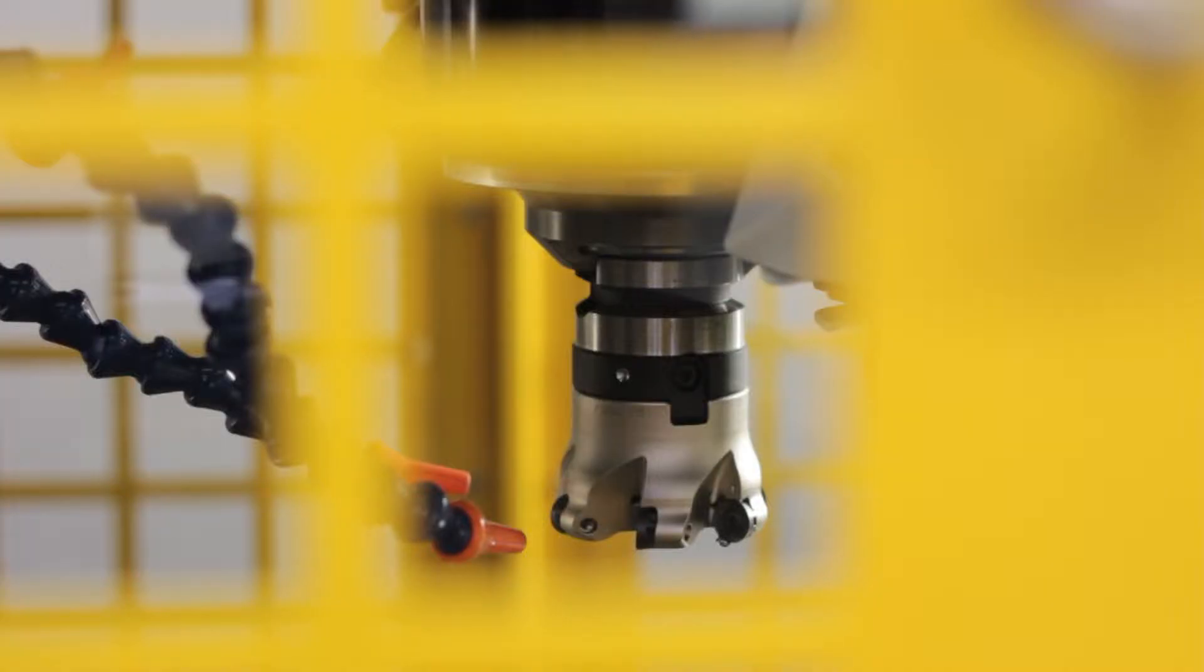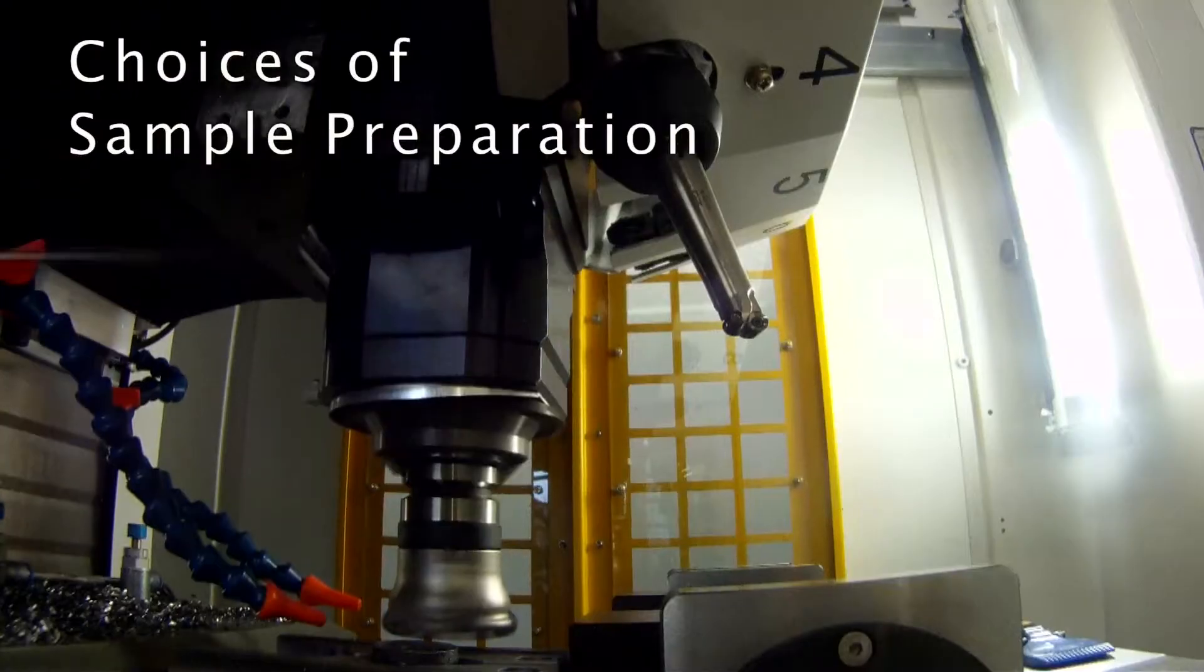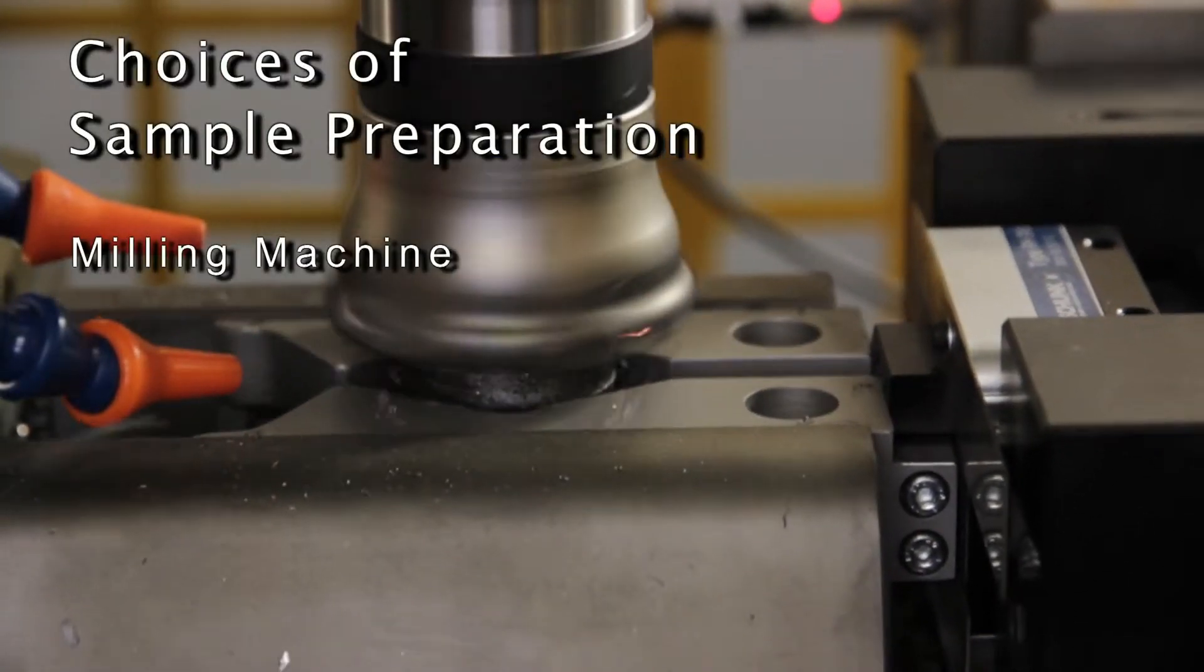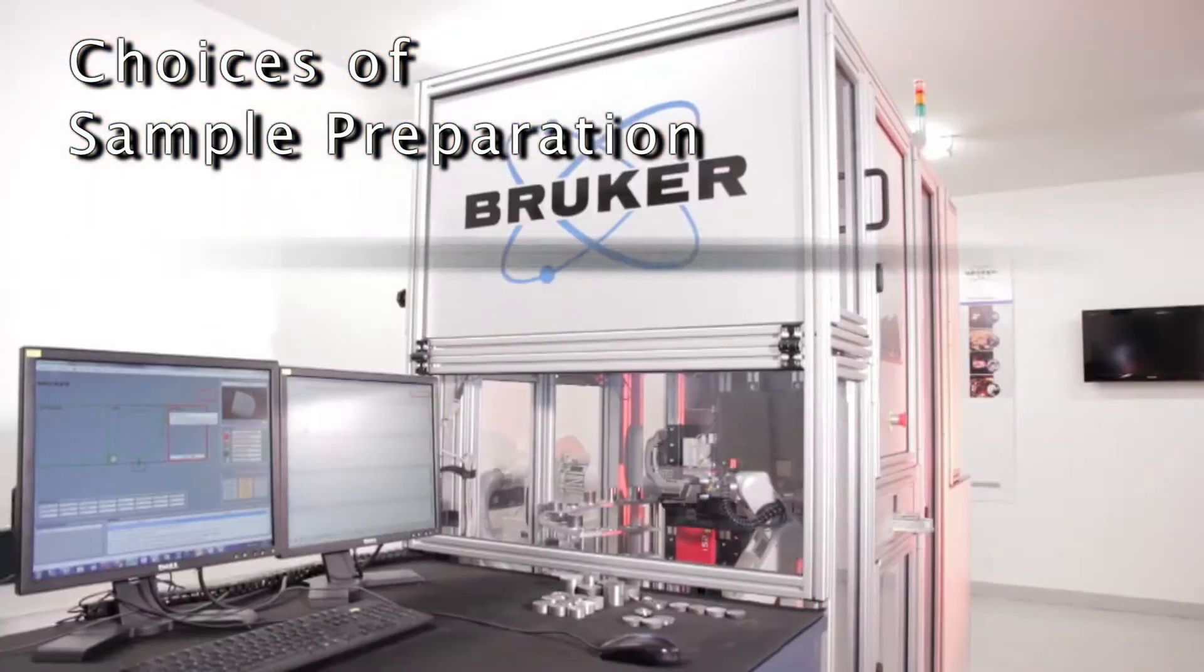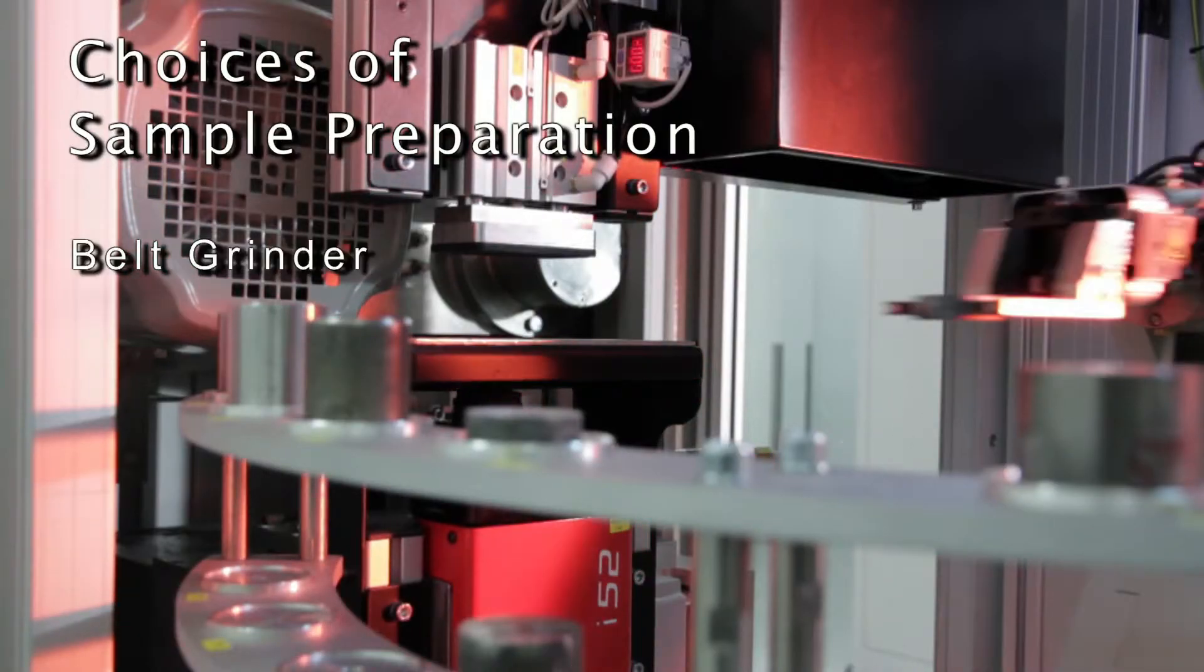It's your choice of sample preparation: an advanced milling machine for the preparation of steels and non-ferrous metals, or a high-performance belt grinder for the preparation of steels and cast iron.